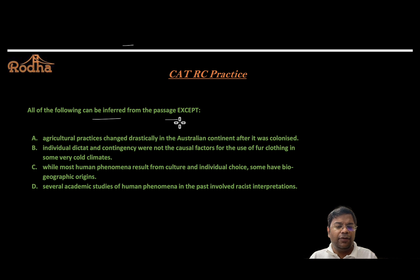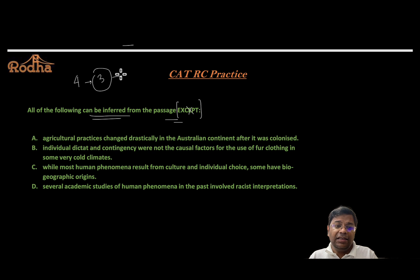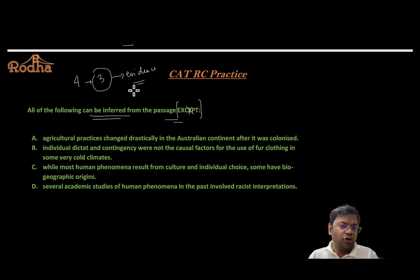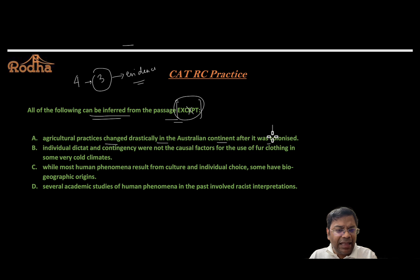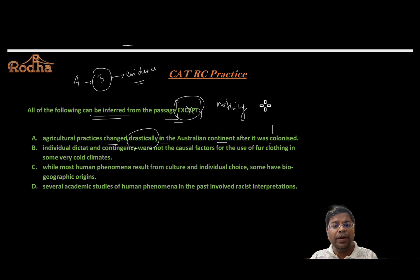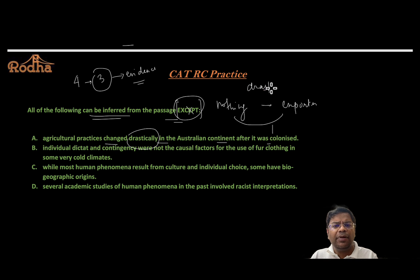Let's do this question: 'All of the following can be inferred from the passage EXCEPT.' On these kinds of questions, I always say forget what 'except' means — assume there is no except. Out of four options, you can infer three. Option A: agricultural practices changed drastically in the Australian continent after it was colonized. Australia had nothing and then became a food and wool exporter — so there was considerable change. 'Drastically' is a strong adverb, so I'll keep this option on hold.